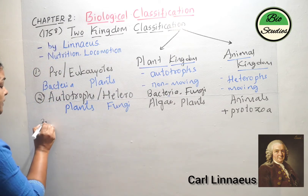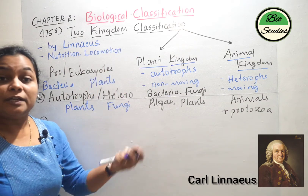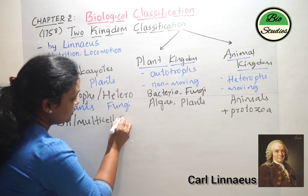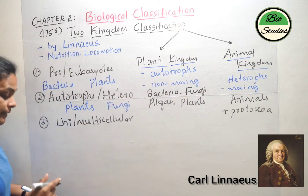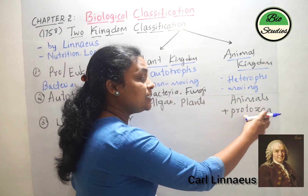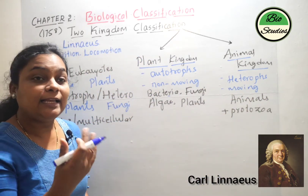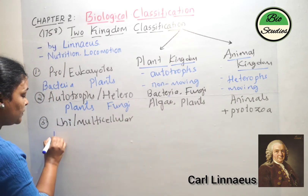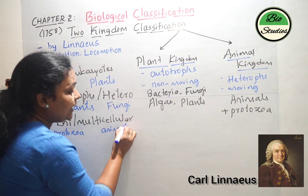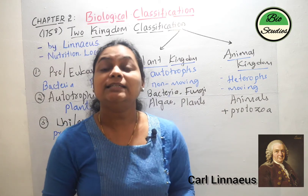The third limitation was that two kingdom classification did not differentiate between unicellular and multicellular organisms. For example, protozoans such as amoeba, paramecium, and euglena are unicellular organisms, yet they were placed with multicellular and highly evolved organisms like animals. So protozoans, which are unicellular, were placed with animals. This is the third limitation or demerit.